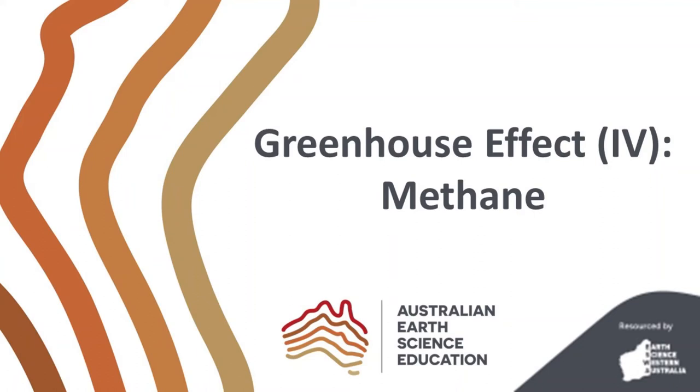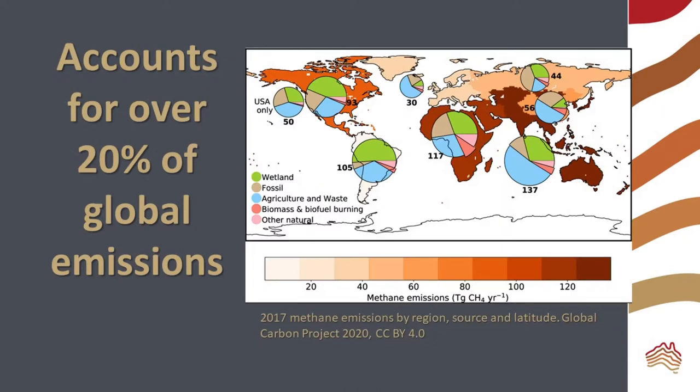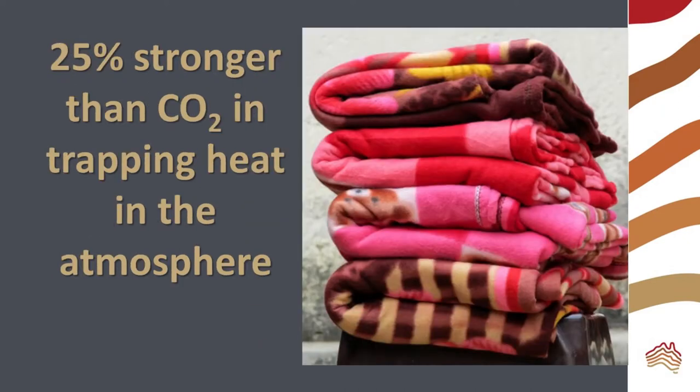Welcome to today's video about the greenhouse effect of methane. Methane is the second most abundant anthropogenic greenhouse gas after carbon dioxide. It accounts for over 20 percent of global emissions and is 25 times more potent than carbon dioxide in trapping heat in the atmosphere.